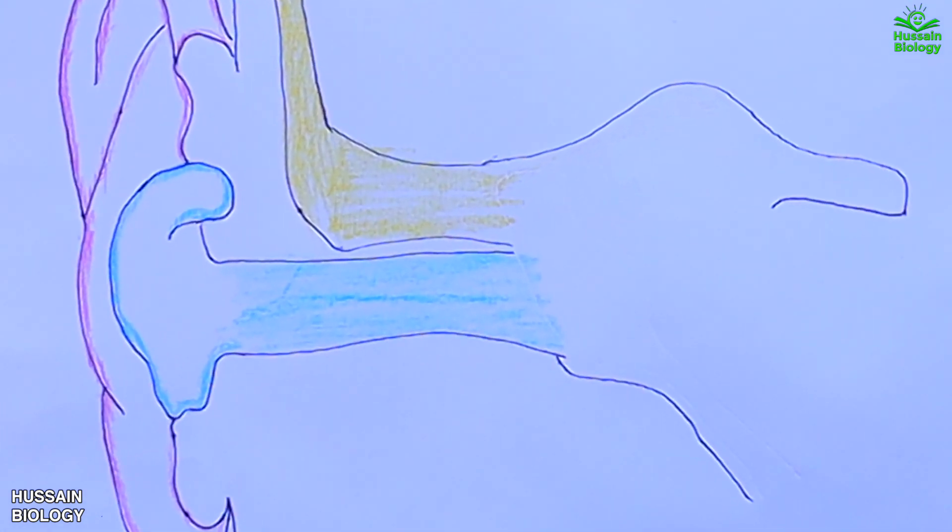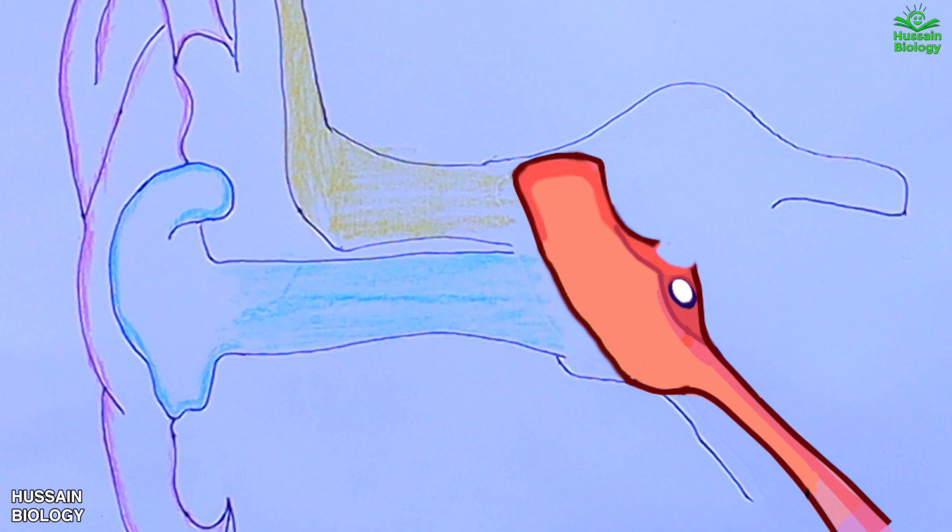First of all we have the eustachian tube, also known as pharyngeotympanic tube. This tube links the nasopharynx to the middle ear.